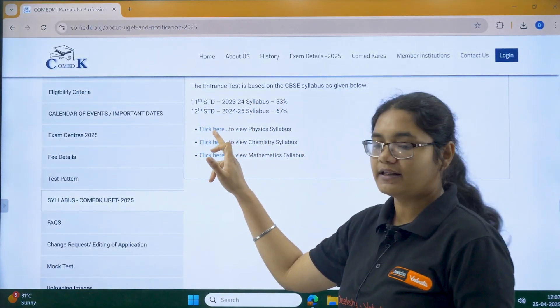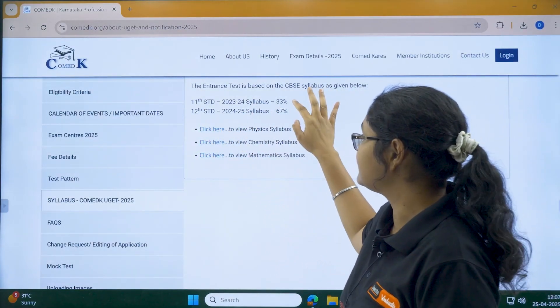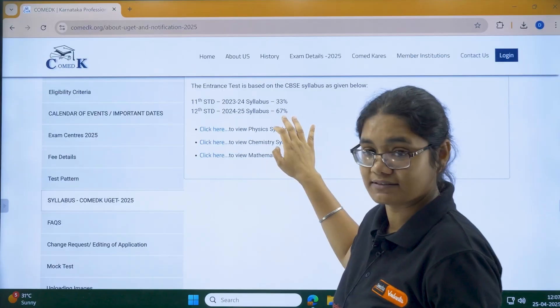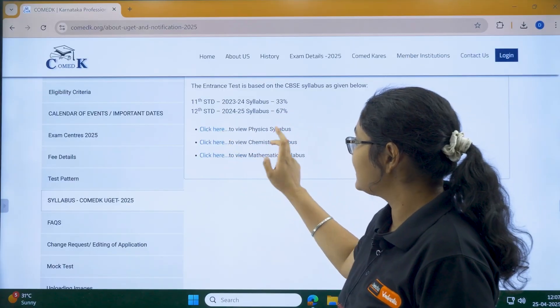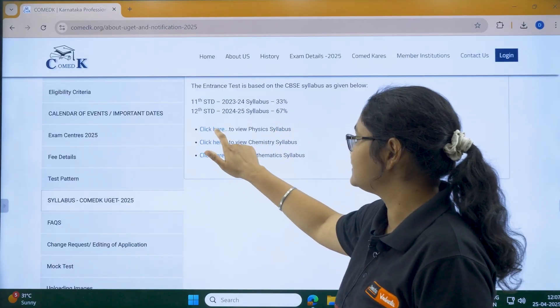You can see the weightage of 11th and 12th standard: 11th carries 33% and 12th carries 67%. You can click each subject and see the syllabus.